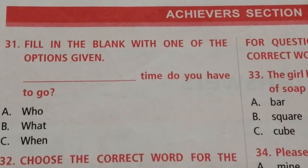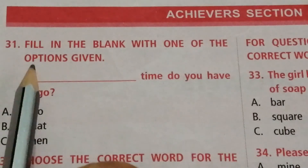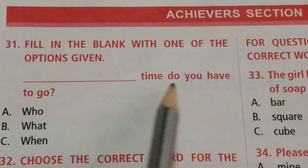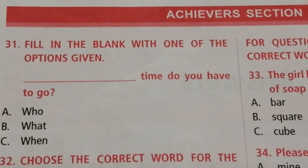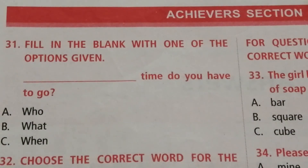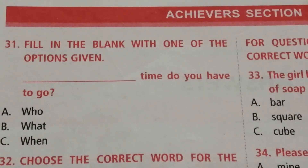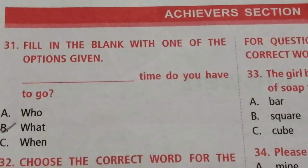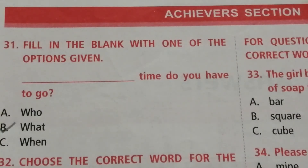Next topic is the Achievers section. Question 31: Fill in the blank with one of the options given. ___ time do you have to go? Options are who, what, when. The answer is B — what. What time do you have to go?